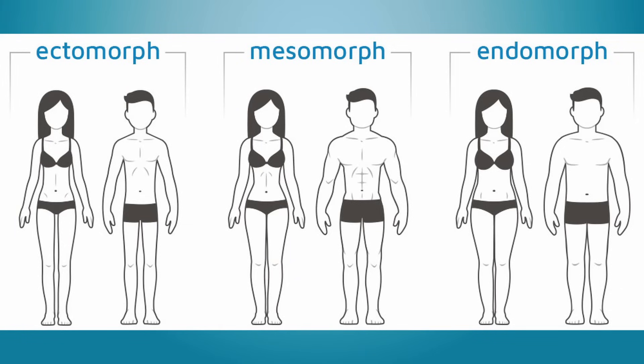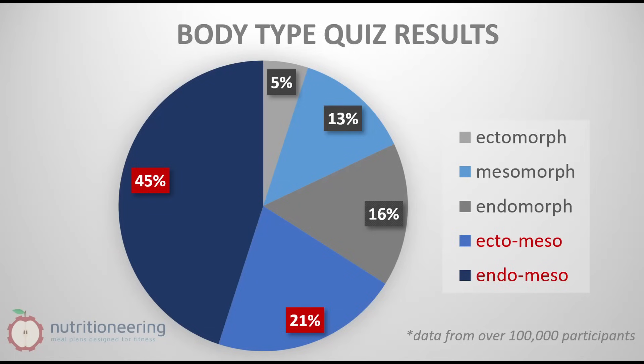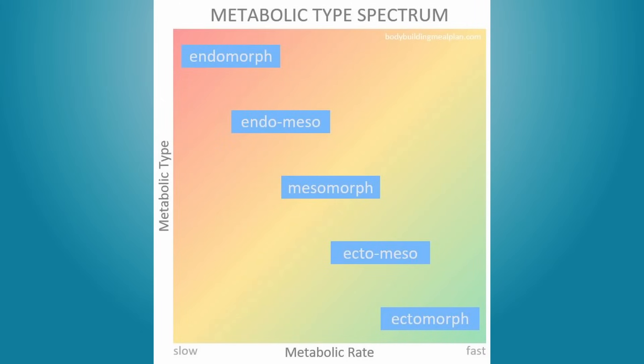It's important to understand that most people don't fit neatly into these three categories. According to a nutrition survey, about two out of three people have hybrid body types. Hybridizing metabolic types provides more discriminant categories. For example, ectomesomorphs have a medium-high metabolism, while endomesomorphs have a medium-low metabolism.